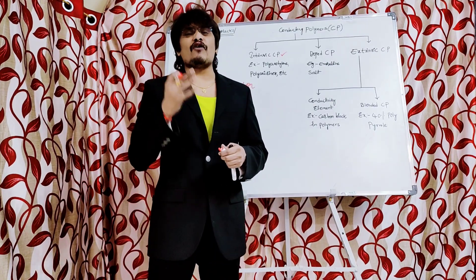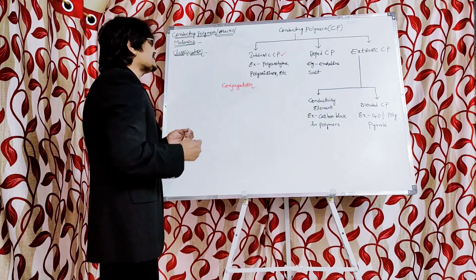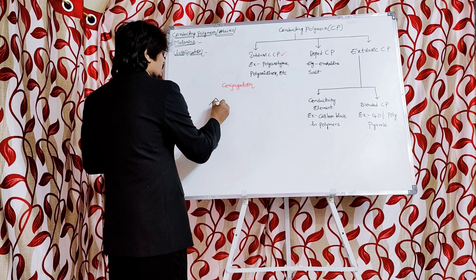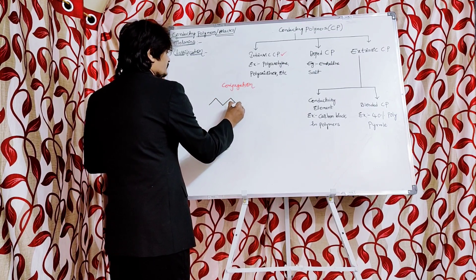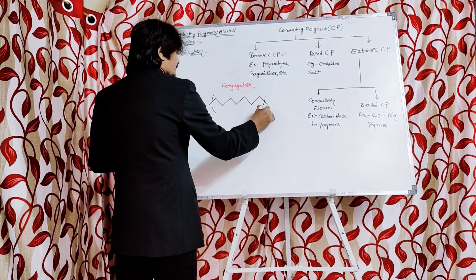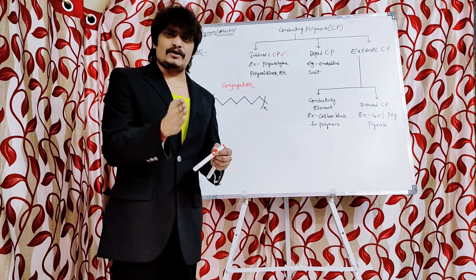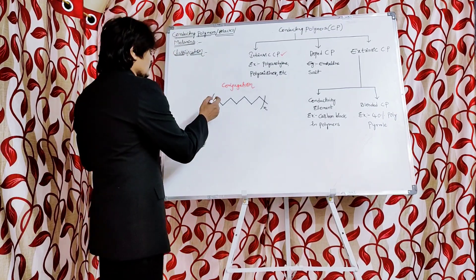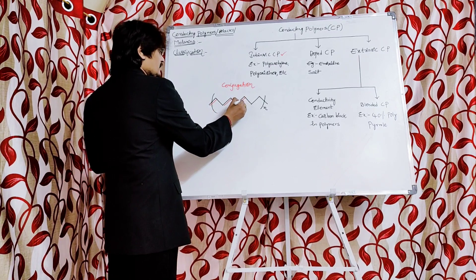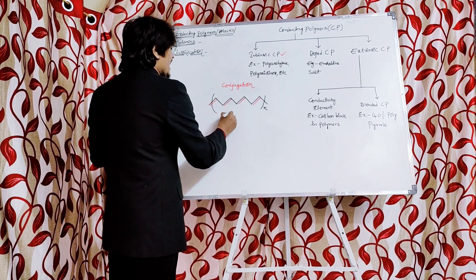For example, if we take polyacetylene — polyacetylene has conjugated double bonds. Conjugated double bonds means a double bond followed by a single bond, followed by a double bond, followed by a single bond, followed by a double bond, and so on. This alternating pattern is the structure of polyacetylene.